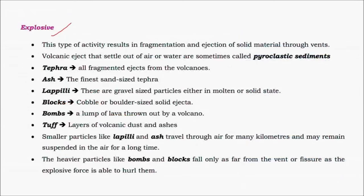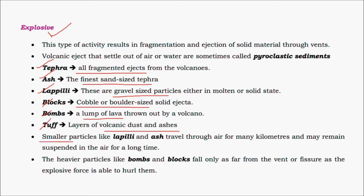The explosive type, as the name suggests, is explosive in nature and throws out various constituents called tephra — ejected fragments during volcanic eruptions. Tephra consists of ash, lapilli, blocks, bombs, and tuff. Ash comprises the finest particles of tephra, lapilli are gravel-sized particles, blocks are pebble-sized solid ejecta thrown far during violent eruptions, and bombs are lumps of lava that fall just around the crater. Tuff is a combination of volcanic dust, ashes, and smaller particles.